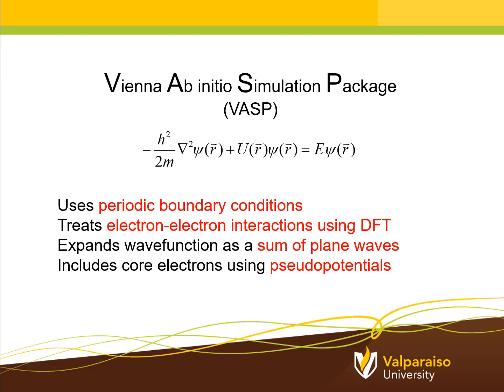VASP stands for Vienna Ab Initio Simulation Package. Ab initio is just a fancy way of saying from first principles. We're not going to smuggle into the calculations the results of any experiments. Everything that we calculate will be from scratch, given only the atomic numbers and the Schrödinger equation.